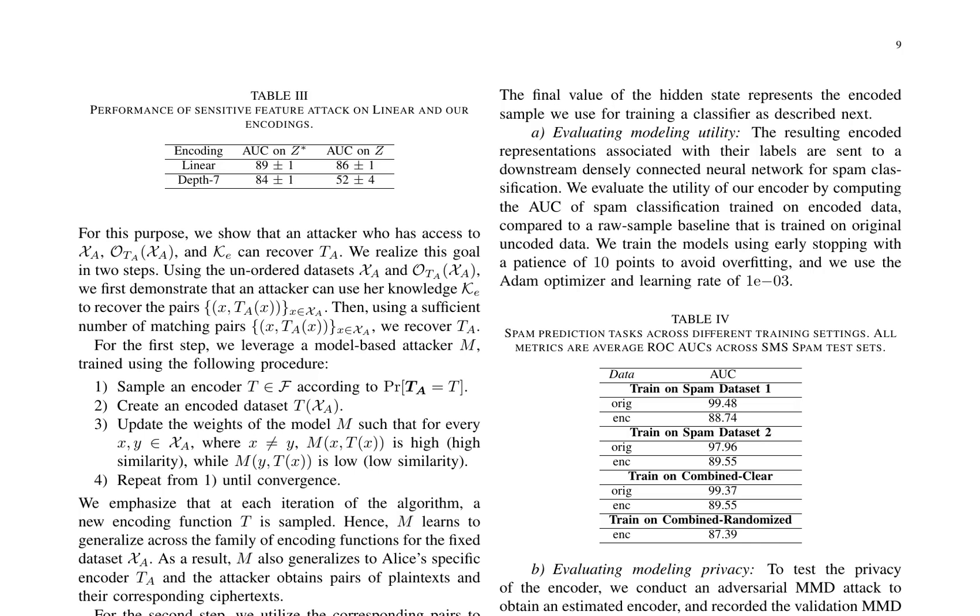This scheme employs a random deep neural network, offering improved privacy over linear approaches while maintaining competitive accuracy to raw sample baselines. Evaluations on two benchmark chest X-ray datasets and a spam text dataset demonstrate that models trained on encoded data achieve competitive performance to raw sample baselines.